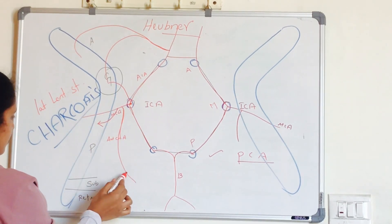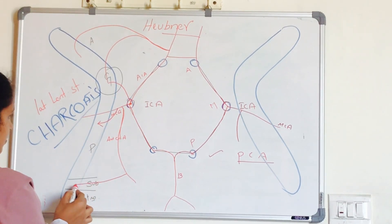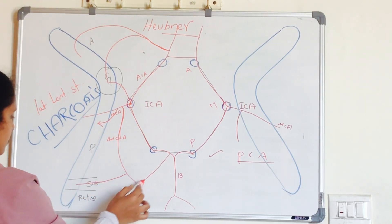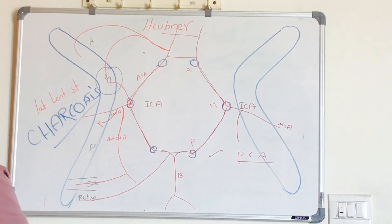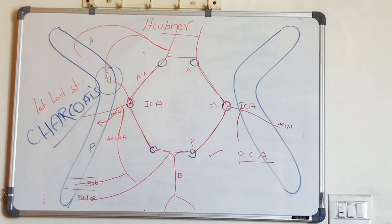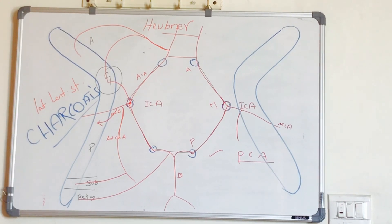The branch from the middle cerebral artery is the anterior choroidal artery, which supplies the sublentiform part. Next, the posterior cerebral artery supplies the retrolentiform part of the internal capsule.